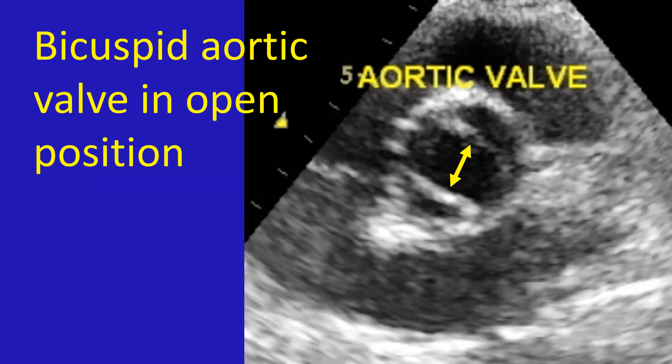Thickening and distortion of valve leaflets is common in diseased valves and may be noted on echo reports. Sometimes the number of leaflets may be abnormal. For example, the aortic valve usually has three leaflets. If it has only two leaflets as a congenital abnormality, it is called a bicuspid aortic valve.